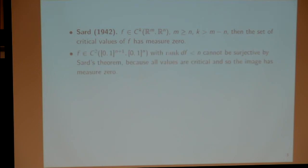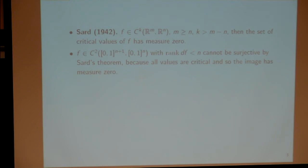This is a celebrated result of Sard: when the mapping is sufficiently regular—when the smoothness of the mapping is larger than the difference of dimensions—then the set of critical values has measure zero, so almost every point in R^n is a regular value. In particular, for C² mappings between cubes where the difference in dimension is one, if the rank of the derivative is less than n everywhere, then every point is critical, and by Sard's theorem the image of the entire cube must have measure zero, so the mapping cannot be surjective.